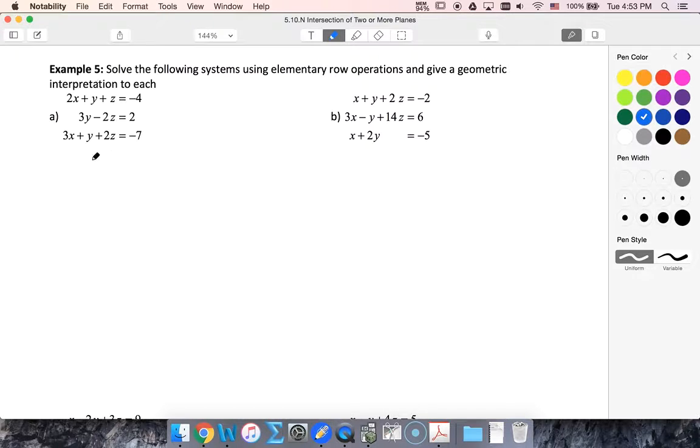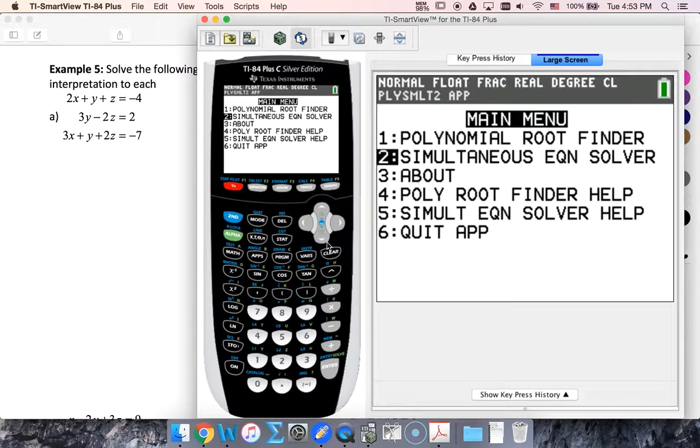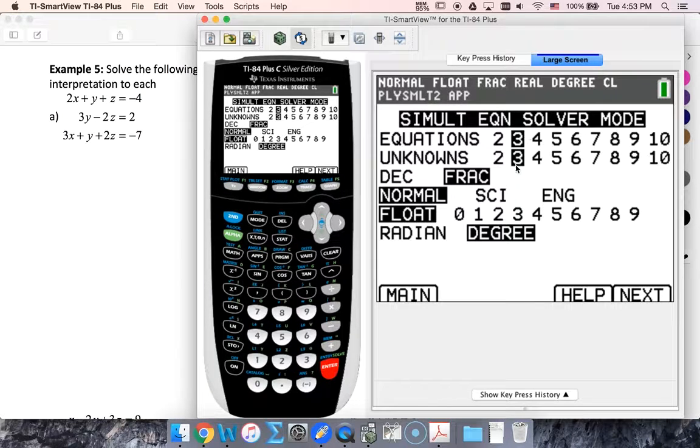And if I have my calculator, I'm just going to use polysymult. So if I go into my calculator, you can see that I've done this one already. So simultaneous equation solver in polysymult, and I have a 3 by 3 system.